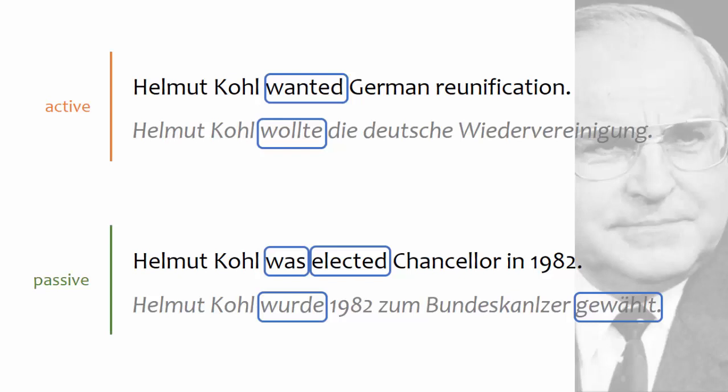In sentences in the active, the subject is the person or thing doing the action. If you begin with the verb here and ask who wanted German unification, the answer is Helmut Kohl, which means that he is the subject.